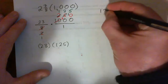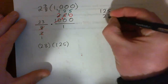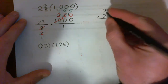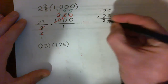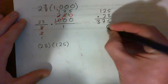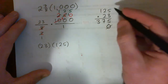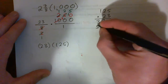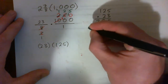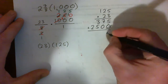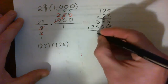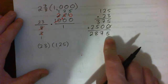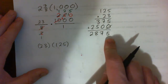Three fives is 15, carry one; three twos is six and one is seven; three times one is three. Put down the zero: two times five is 10, carry one; two times two is four and one is five; two times one is two. Then add, and we get 2,875.